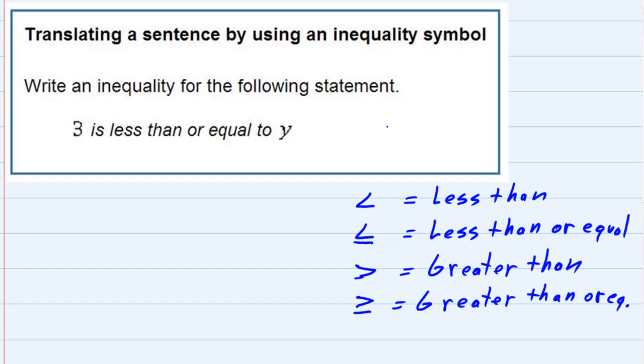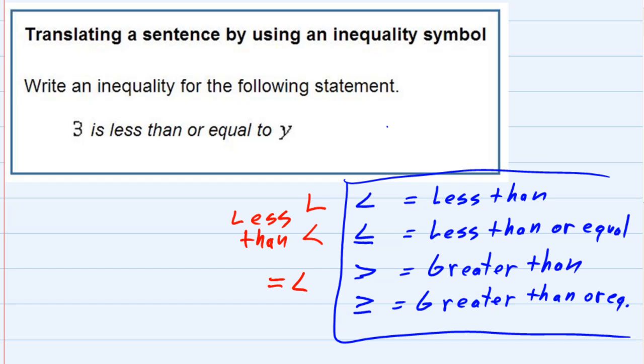So, for each one of those, that's the verbal translation from the symbol, and the way that I help remember it is that the ones that look kind of like an L, only more laying down, those are the less than symbols, and of course the line underneath it kind of makes it a hybrid, where it's almost an equal sign and almost a less than sign, then you would have less than or equal to.